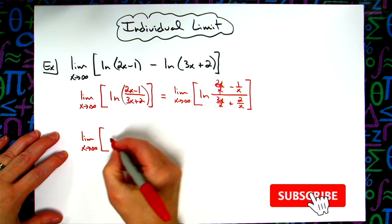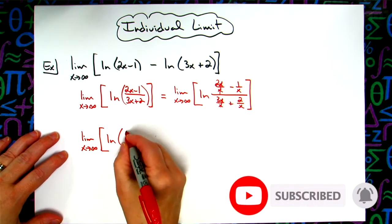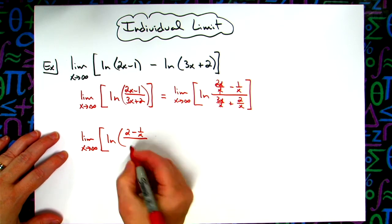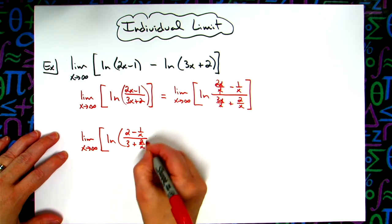We're still going to have the natural log there out in front. Simplifying that expression, I have just a 2 minus 1 over x. Simplifying the denominator, I will have just a 3 plus 2 over x.